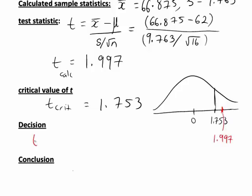So in this case, you can see that the calculated value of t was greater than the critical value. Because of the direction of the hypothesis test, that therefore leads us to reject H0 at our 5% level of significance.